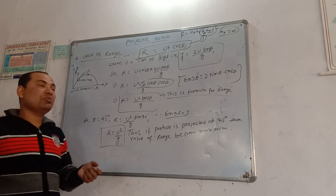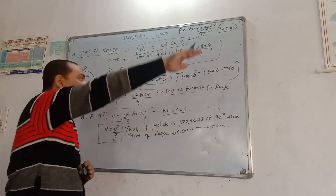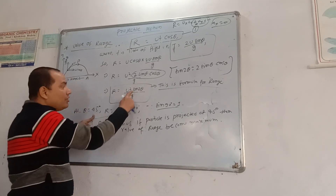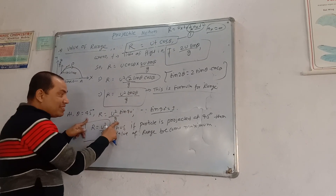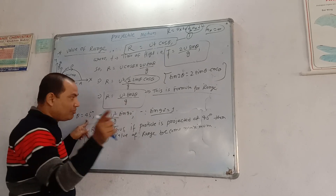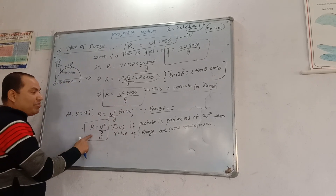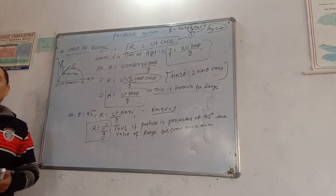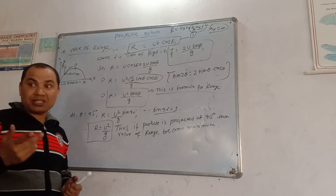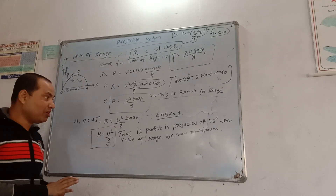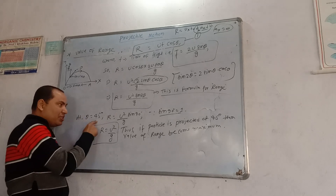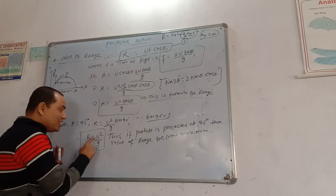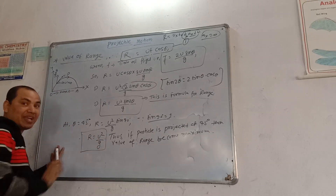But if we throw the particle at an angle of 45 degrees, theta equals 45 degrees, then R = u²·sin 90° / g. Since sin 90° equals 1, R = u²/g. This is the maximum value. So the particle covers maximum distance when thrown at 45 degrees — the range is maximum at 45 degrees.